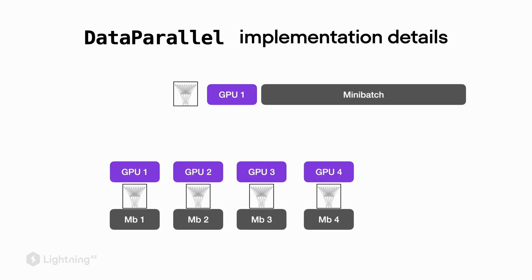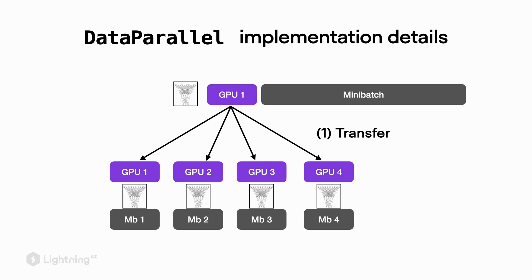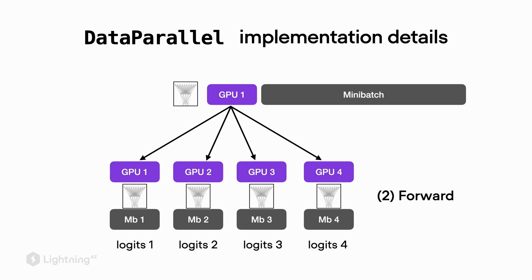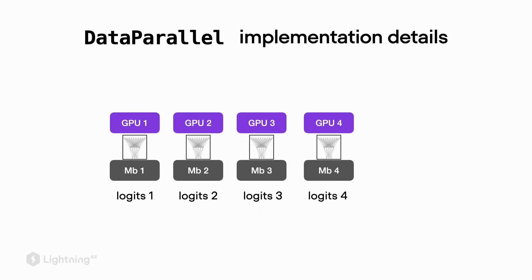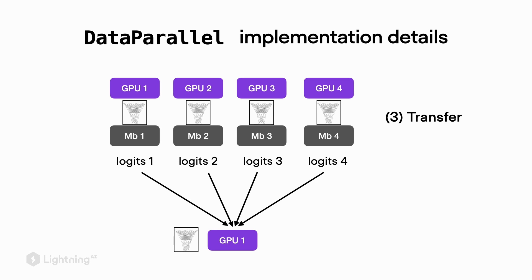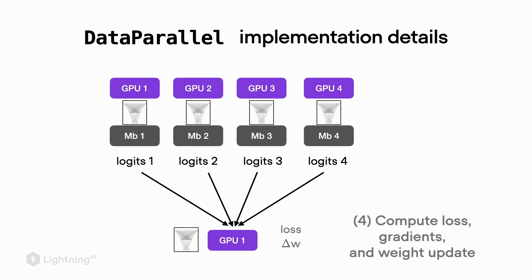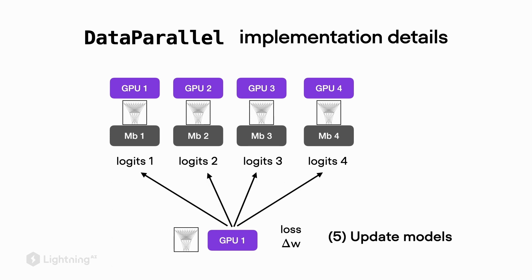Let's look at the implementation details of the DataParallel strategy. The first step is a transfer from one GPU to the other GPUs, transferring the model and the micro batches. On each GPU we perform the forward pass to compute the logits — the outputs of the last layer of the neural network. Then, unlike averaging gradients directly, DataParallel transfers the logits back to one GPU, where it computes the loss, gradients, and weight update, then updates each model copy on each GPU.